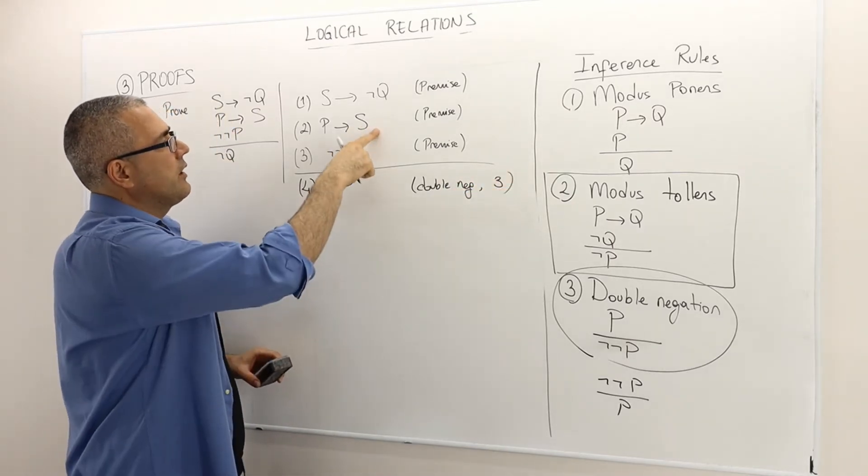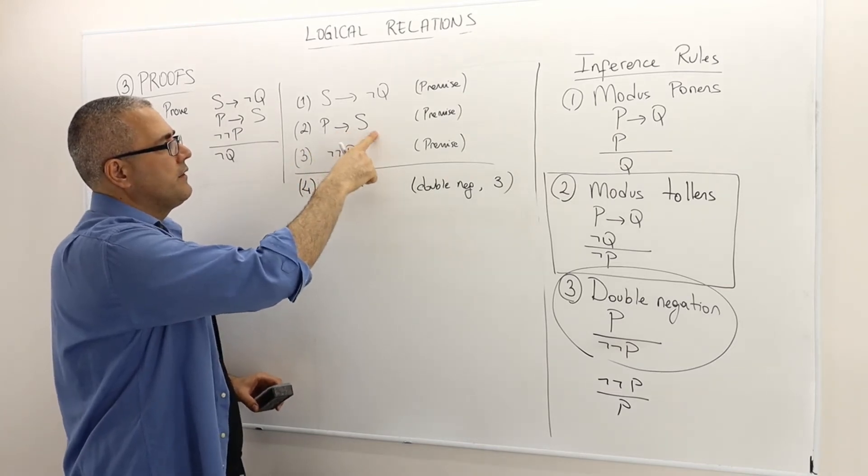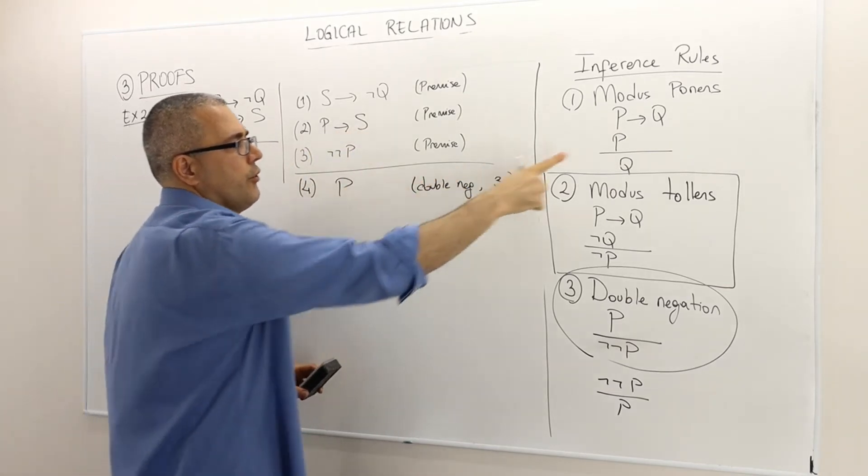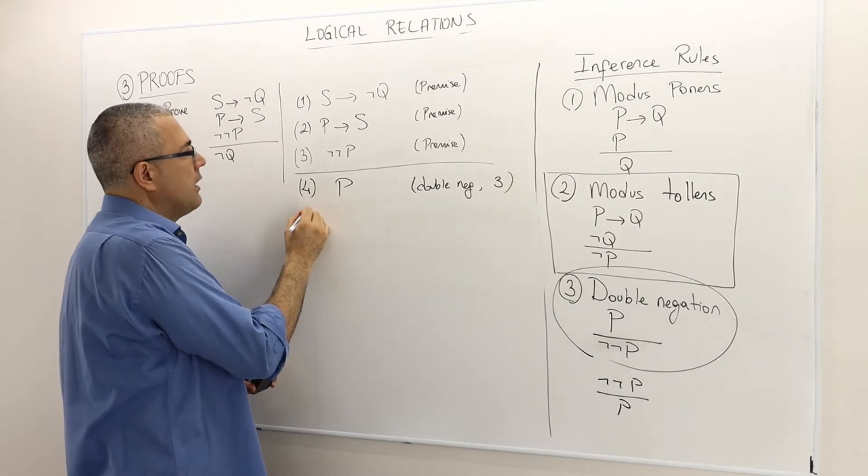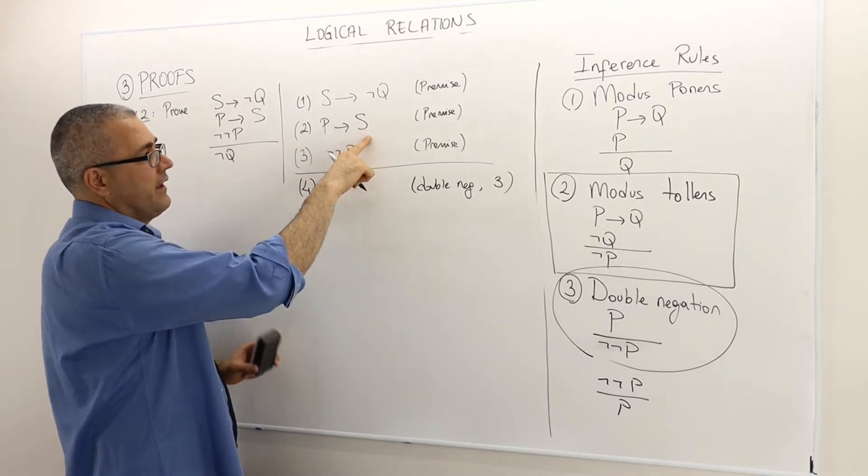Well, what else? Look at premise number 2. P implies S, I know P is true, so therefore Q must be true. I'm sorry, here it is S.